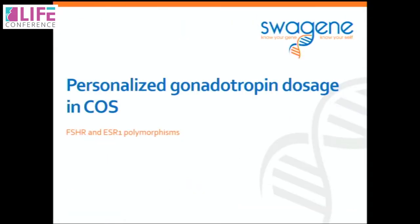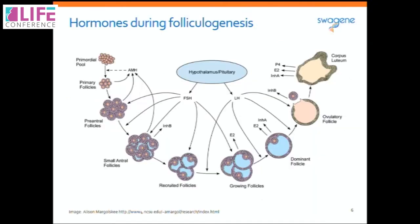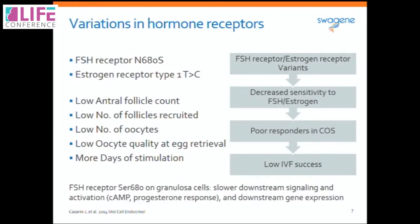We will start with female infertility and how we use genetic polymorphisms in women, focusing mainly on the FSH receptor polymorphism and the polymorphism in estrogen receptor type 1. The FSH receptor is expressed in folliculogenesis right from primary follicles and preantral follicles, and is responsible for AMH secretion by these follicles. When variations in FSH receptor and estrogen receptor type 1 are present, it leads to poorer response in women for controlled ovarian stimulation during IVF — resulting in low antral follicle count, low number of follicles recruited, lower number and quality of oocytes retrieved, and increased days of stimulation. This is because the FSH receptor variation leads to decreased downstream signaling and decreased gene transcription and expression in folliculogenesis.